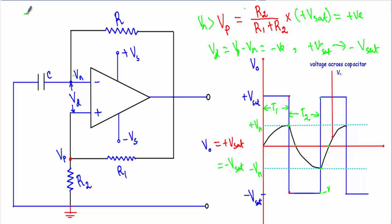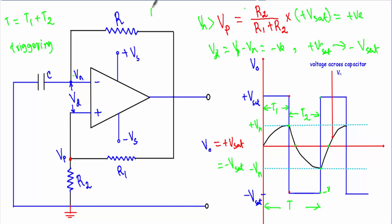The output voltage stays either at plus Vsat or minus Vsat, with two time intervals T1 and T2, giving a total period T for the square waveform from one complete positive and negative half cycle. This is how the operational amplifier generates a square waveform. No triggering pulse is needed, and the transition between plus Vsat and minus Vsat levels is totally spontaneous. Therefore it is called a free-running multivibrator, as the swinging between levels does not depend on any external parameters.